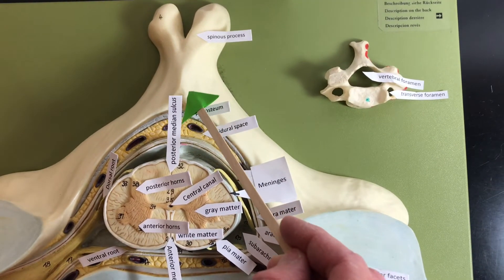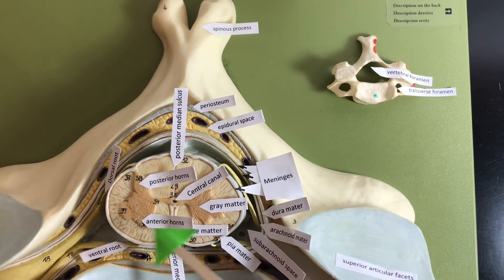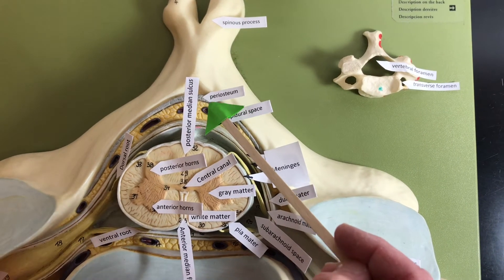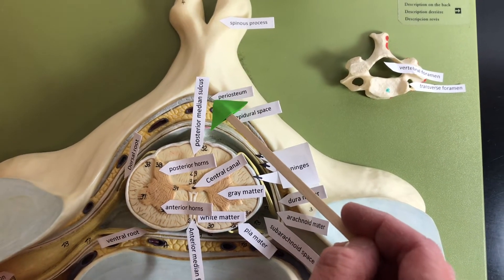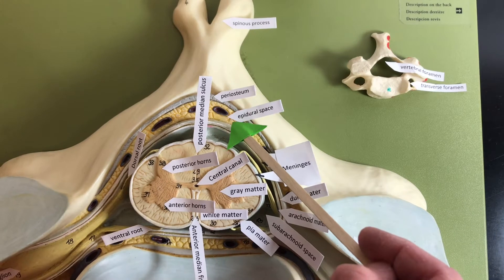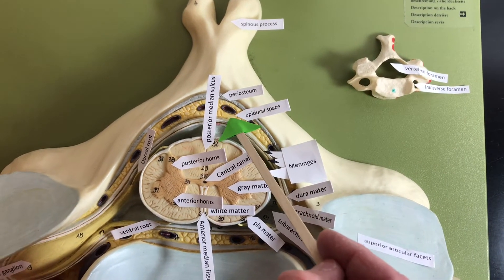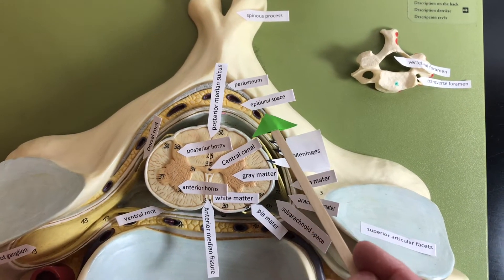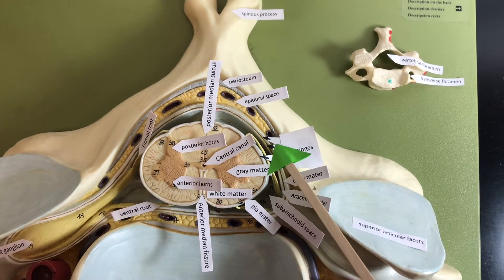Between the vertebrae and the spinal cord we have some structures we need to talk about. So underneath the periosteum is going to be the epidural space. This is where if you get an epidural they inject it in here. And then we have the meninges.